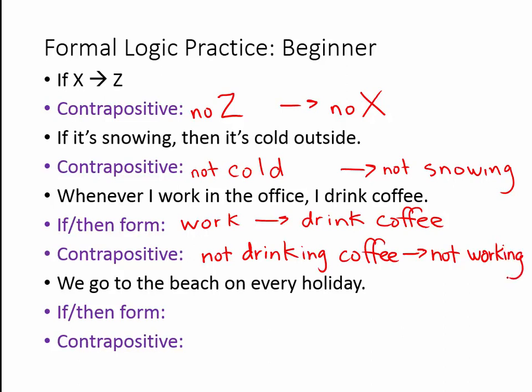The last one: we go to the beach on every holiday. Again, this is not in the standard if-then form. What you should realize is that if it's a holiday, then we go to the beach — because we say we go every holiday, so if it's a holiday we are definitely at the beach. The contrapositive is: if no beach, then we know it's not a holiday.